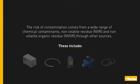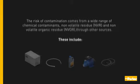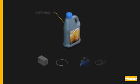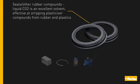The risk of contamination comes from a wide range of chemical contaminants — non-volatile residue and non-volatile organic residue. These include compressors, flexible hoses, lubricants, transfer pumps, and seals with other rubber compounds. Liquid CO2 is an excellent solvent, effective at stripping plasticizer compounds from rubber and plastics.